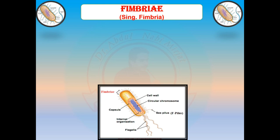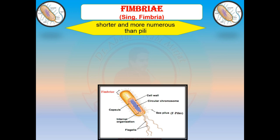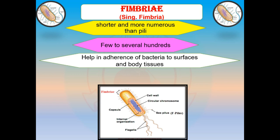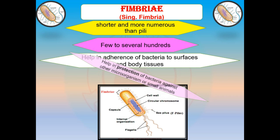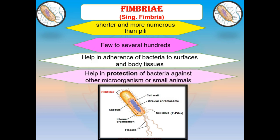Fimbriae are also structures found in bacterial cells. They are shorter and more numerous than pili — while pili number one or a few, fimbriae can number from a few to several hundreds. Fimbriae help in adherence of bacteria to surfaces and body tissues, with functions similar to common pili. They also help in protection of bacteria against other microorganisms or small animals.